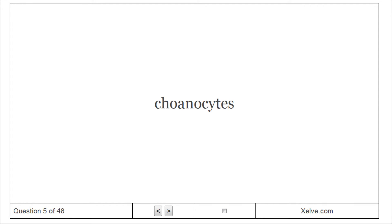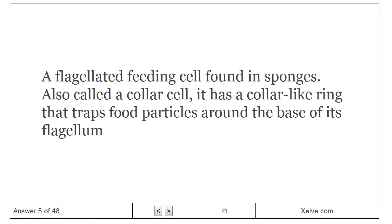Choanocytes. A flagellated feeding cell found in sponges, also called a collar cell. It has a collar-like ring that traps food particles around the base of its flagellum.